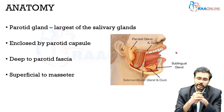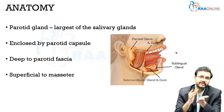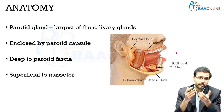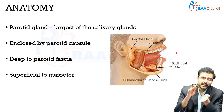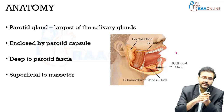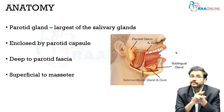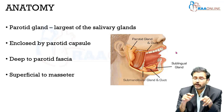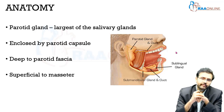It is very important to note that the anterior sheet of this deep cervical fascia, which forms the parotid capsule, is very much more adherent to the parotid gland compared to the posterior sheet. This is very important with regard to certain pathologies involving the parotid gland.